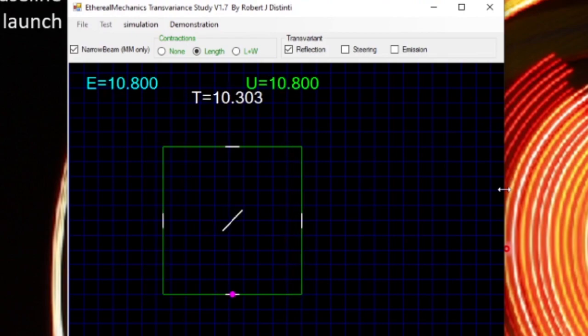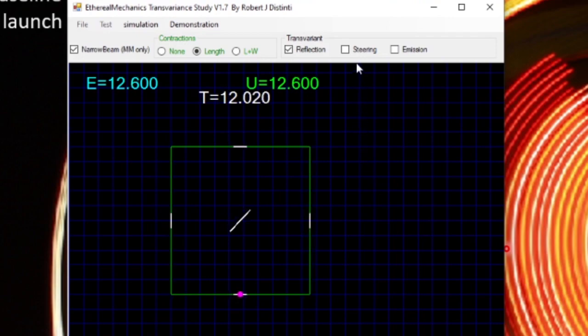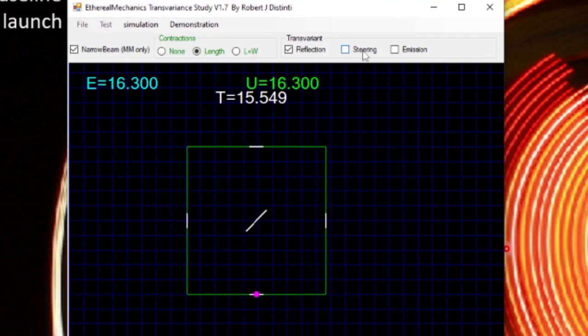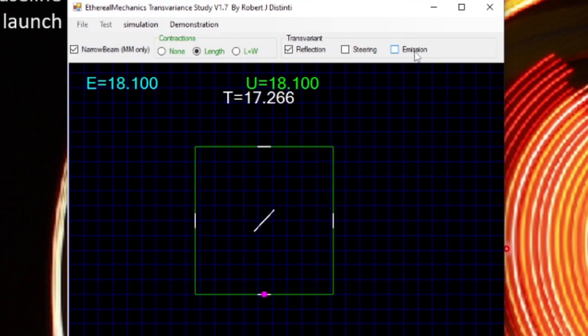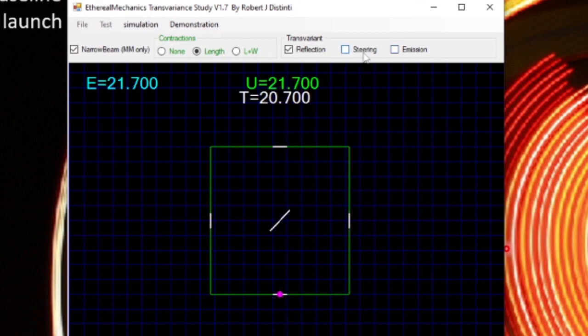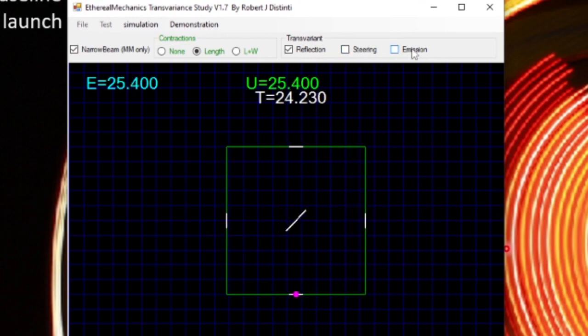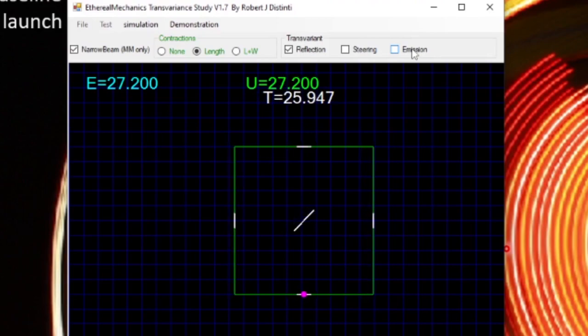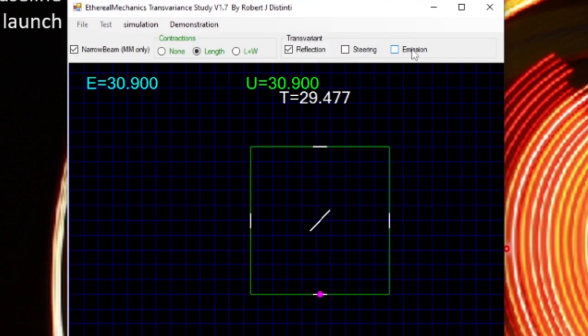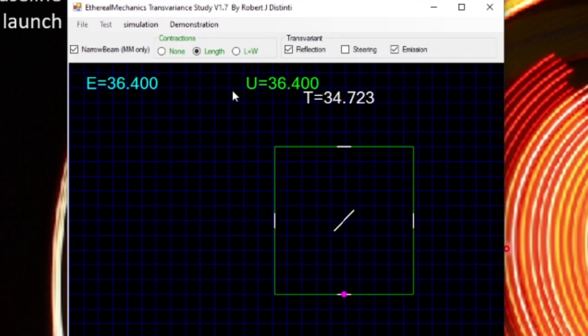When I first rationalized this all out, that was going to be the steering transvariance for light sources. Then later I realized there needed to be emission for electrostatic sources as well. But it turned out these turned out to be the same thing. In the simulator, whether you put steering transvariance or emission transvariance, you get the same thing. We're going to refer all these to the more primordial one, which is emission transvariance.